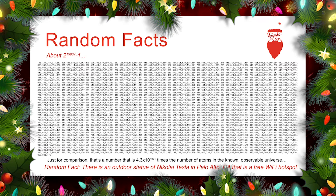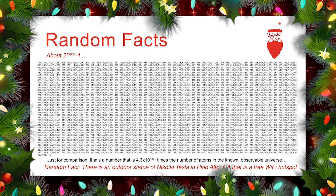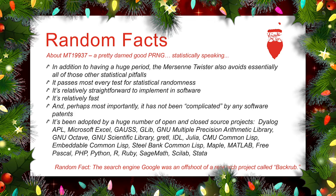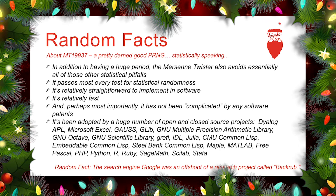It's a huge, huge period. Just for comparison, that's a number that is about 4.3 times 10 to the 5,921st power times the number of atoms in the known observable universe. That is a big, big number, and it gives the Mersenne Twister an enormous period — the amount of numbers it can generate before it will begin generating the same sequence again. In addition to having a huge period, the Mersenne Twister also avoids most of those other statistical pitfalls.